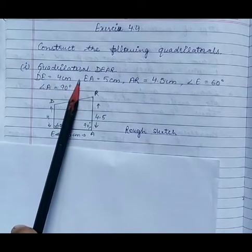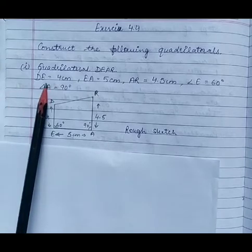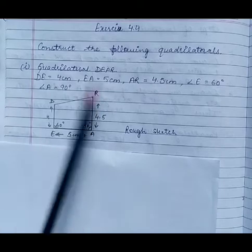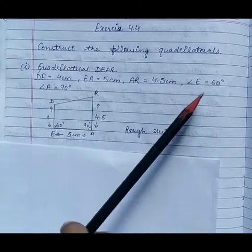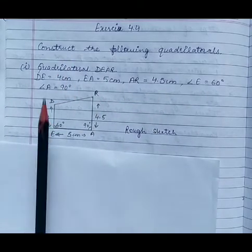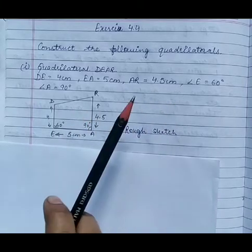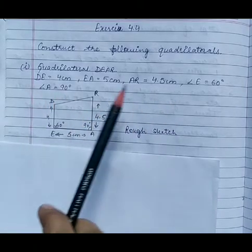Now here quadrilateral DEAR. So first of all one side DE is given 4 cm, EA is given 5 cm, AR is given 4.5 cm, angle E is given 60 degrees and angle A is given 90 degrees. So here 2 adjacent angles are given with 3 sides.